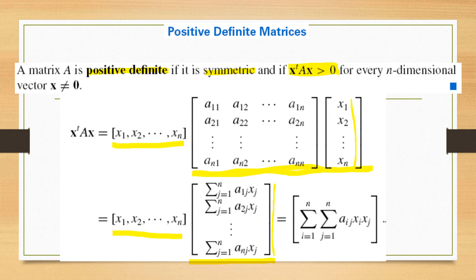And we obtain this identity which is written in summation form here.